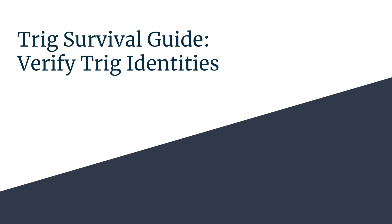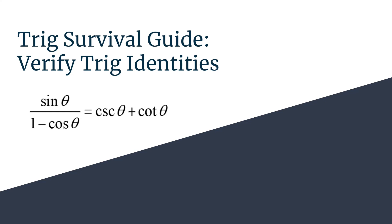Welcome to your trig survival guide. Today we're going to verify a trig identity that allows us to take a closer look at the strategy of using a conjugate. When you see an expression like one minus cosine or sine, one plus cosine or sine in a numerator or denominator of a fraction, that's a good clue that trying a conjugate may help you out in your verification.